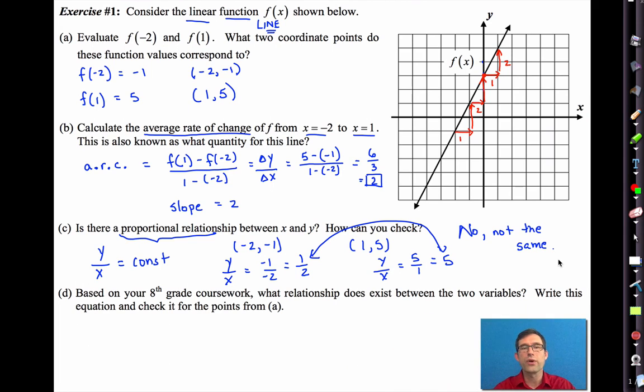If I do y divided by x here, I'd get negative one divided by negative two, and that'll be one half. Here, on the other hand, if I do y divided by x, I'd get five divided by one, and that would just be five. These things in a proportional relationship would be the same. So no, they're not the same.